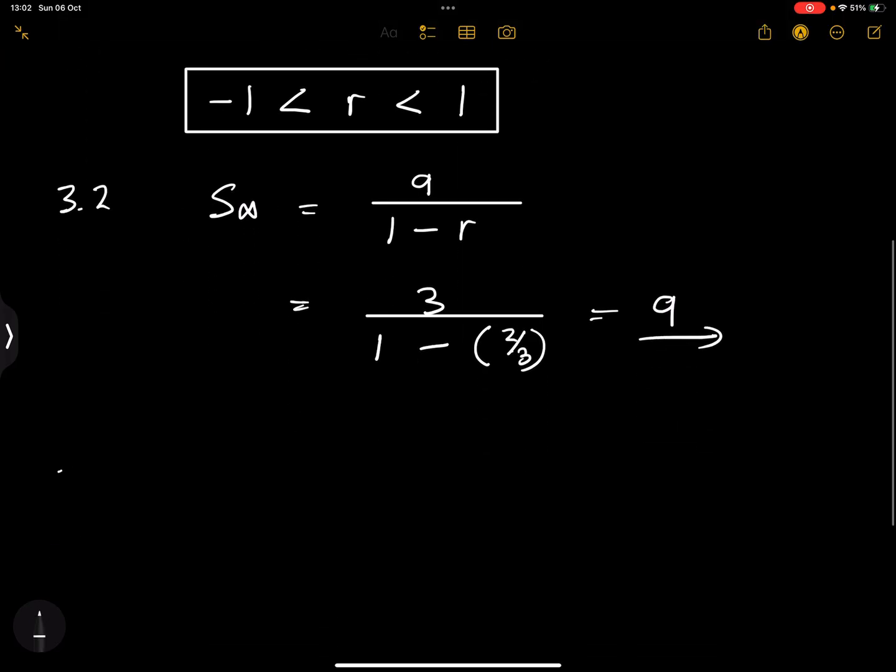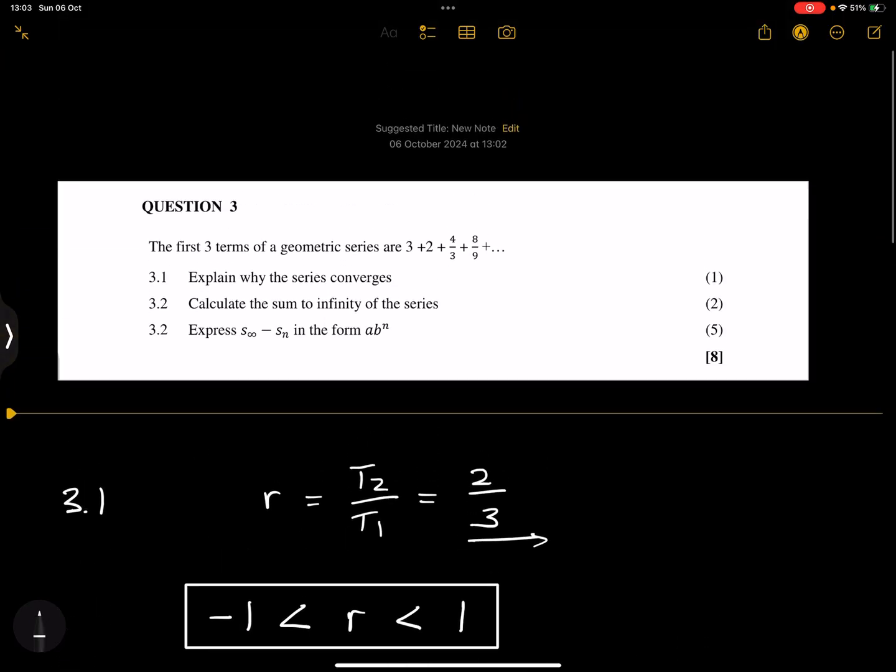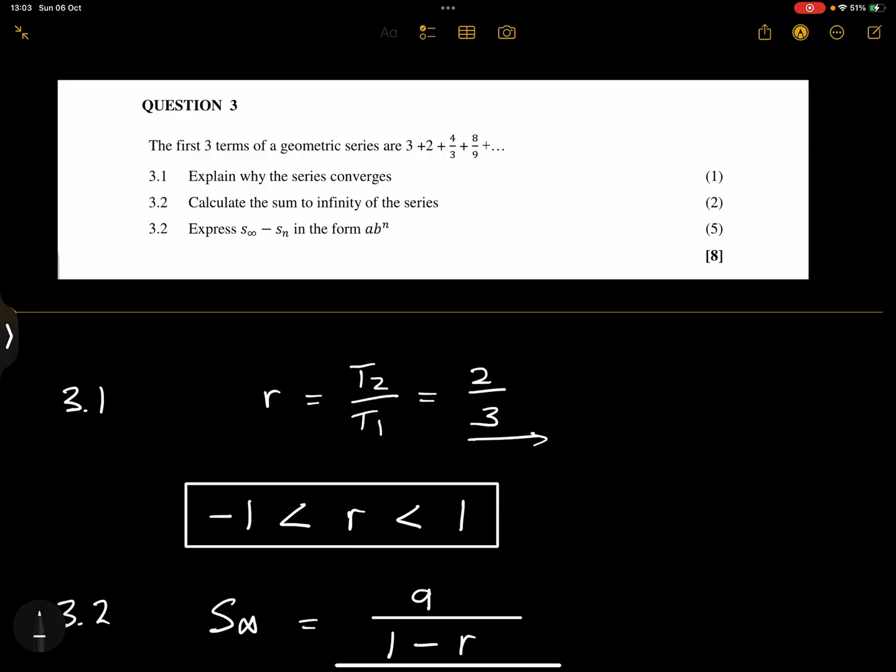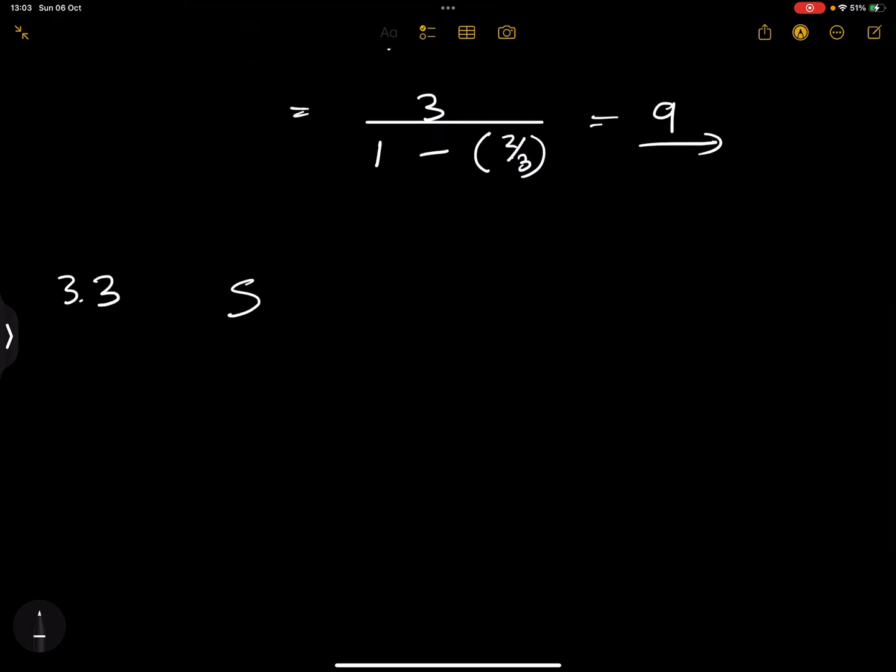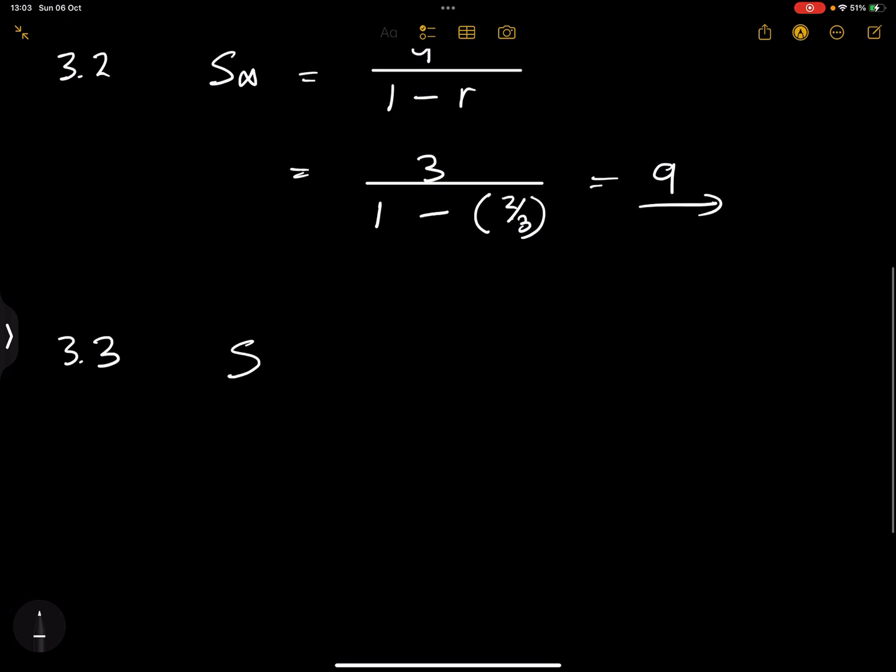That should have been 3.2. And 3.3, that's quite a short question, this. They say express sum to infinity minus SN in the form A times B to the exponent N. So let's firstly, let's just find them separately.